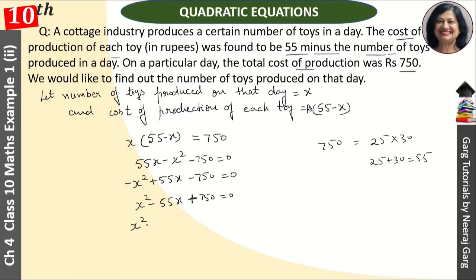So here will be x squared minus 30x minus 25x plus 750, that is equal to 0. In these two, common is x.